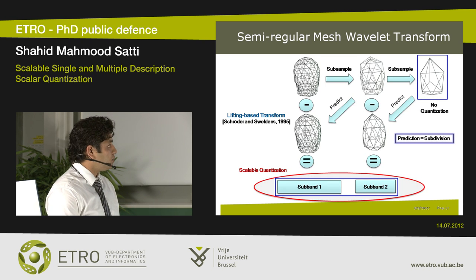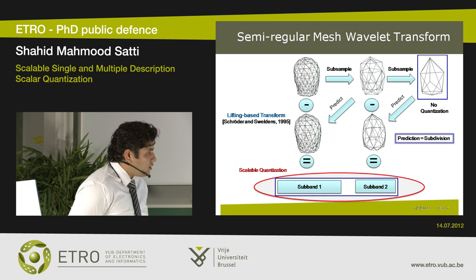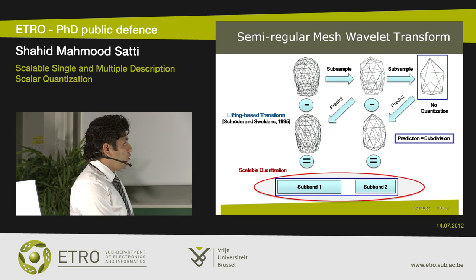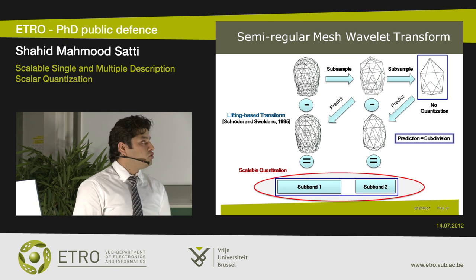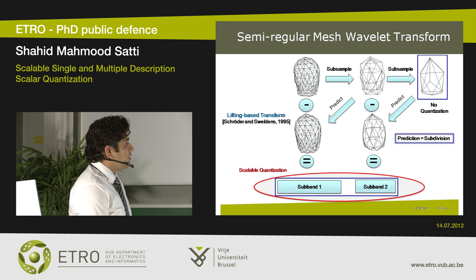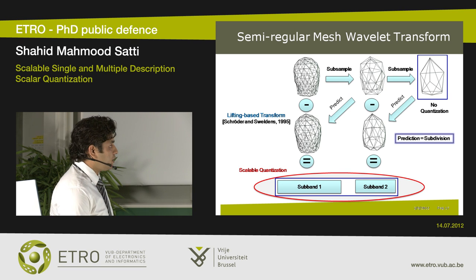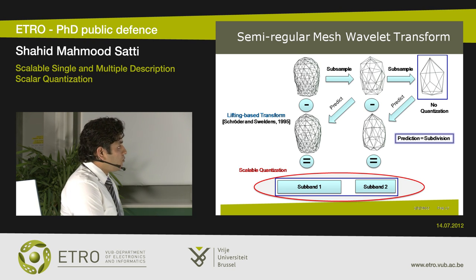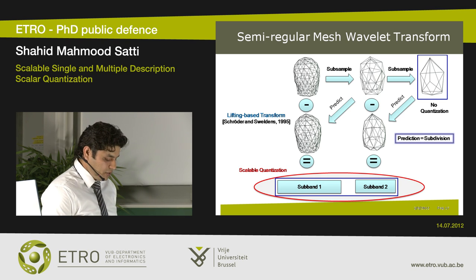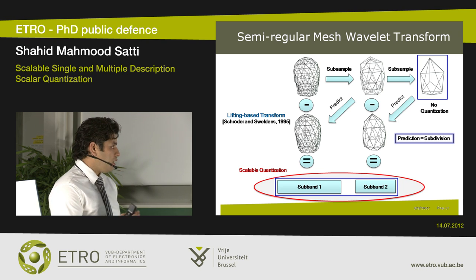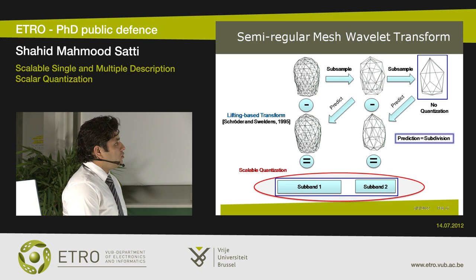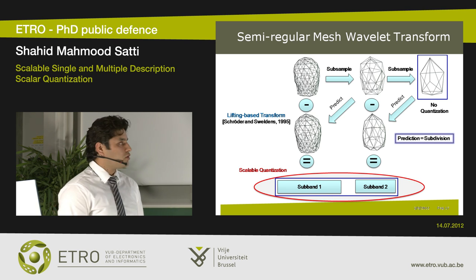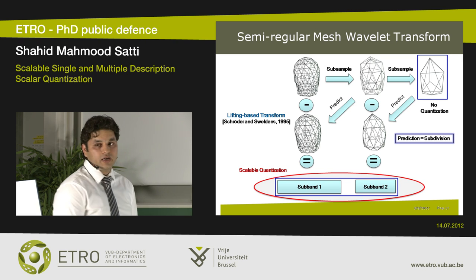For scalable compression of highly detailed semi-regular meshes, we use a wavelet transform or multi-resolution analysis. We take the original semi-regular mesh, go to a coarse mesh using subsampling, and for vertices present in the fine mesh but not the coarse mesh, we create a prediction using subdivision. We record the prediction error as a vector called the subband, or high-frequency subband. Repeating this process on successive lower-resolution meshes produces multiple subbands and a base mesh geometry.